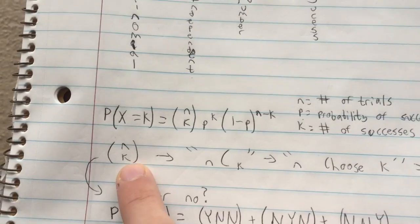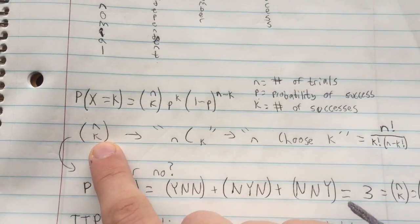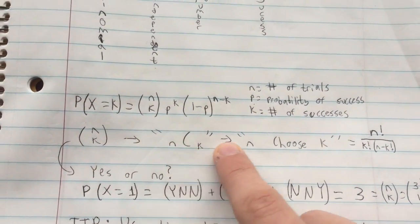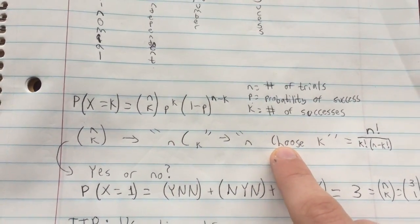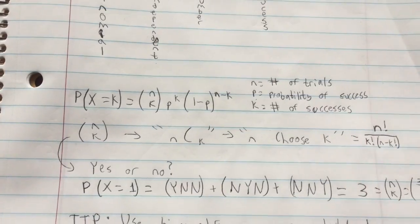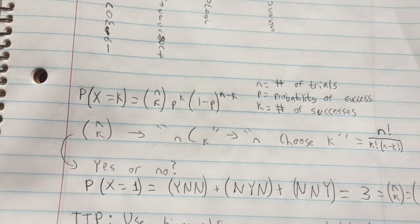Now this constant, you might have heard before, it's called N choose K or N C K. And it basically refers to the general amount of possible ways that a certain event can occur.